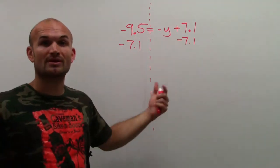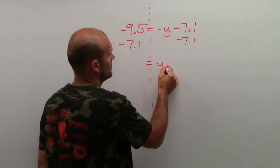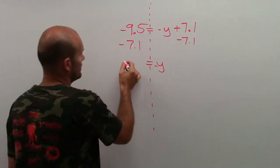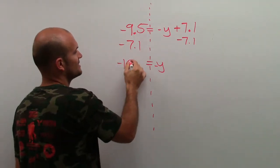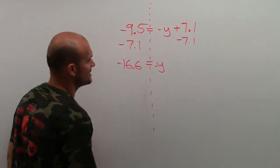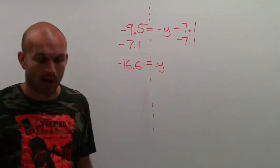Well, 7.1 minus 7.1 is going to become 0. 0 plus negative y is still going to be negative y. And then negative 9.5 minus 7.1 is negative 16.6. So now I have negative 16.6 equals negative y.